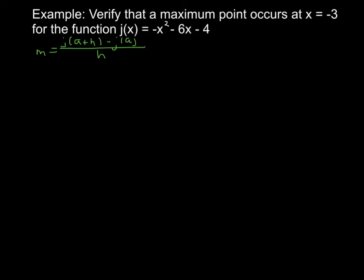In our problem, we can look back and reread a little bit. We can see that we're looking to verify a max point at x equals negative 3, so we're looking to verify that the slope is 0 at x equals negative 3. That means that my a value is negative 3 in this case.